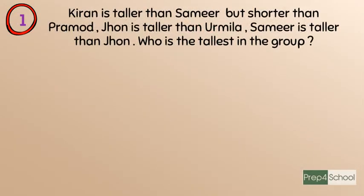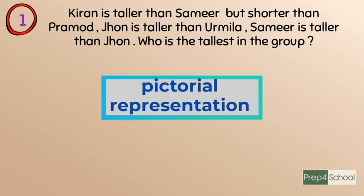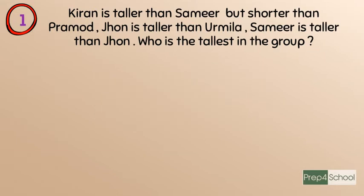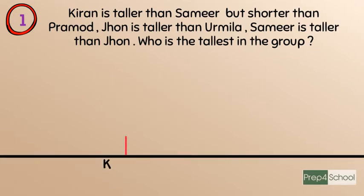Let's start with the first problem: Kiran is taller than Samir but shorter than Pramod. John is taller than Urmila. Samir is taller than John. Who is the tallest in the group? This is a ranking test problem based on height order. Read carefully and draw a pictorial representation based on each given sentence, starting with the first.